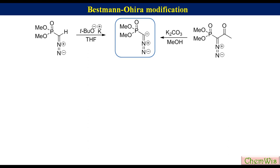Dimethyl diazomethyl 2-oxopropyl phosphonate is called the Bestmann-Ohira reagent. We will now see how the dimethyl diazomethyl phosphonate anion is generated from the Bestmann-Ohira reagent under the modified conditions.